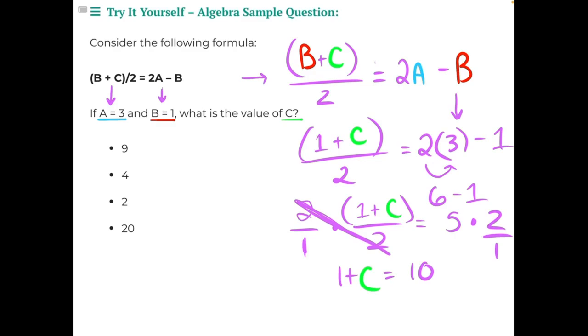1 is being added to C, so we need to do the opposite—subtract 1 from both sides. That gives us C equals 9, making our first option our correct answer.